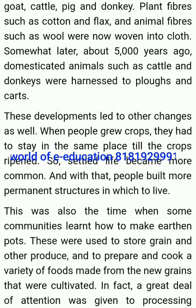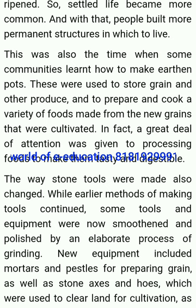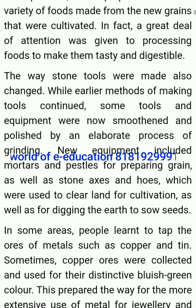Somewhat later, about 5,000 years ago, domesticated animals such as cattle and donkeys were harnessed to plows and carts. These developments helped to bring about other changes as well. When people grew crops, they had to stay in the same place until the crops ripened, so settled life became more common. With that, people built more permanent structures in which to live. This was also the time when some communities learned how to make earthen pots. These were used to store grain and other produce and to prepare and cook a variety of foods. A great deal of attention was given to processing foods to make them tasty and digestible. The way stone tools were made also changed — some tools and equipment were now smoothened and polished by an elaborate process of grinding.